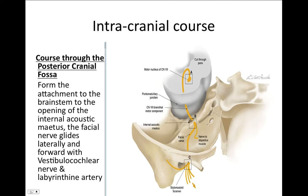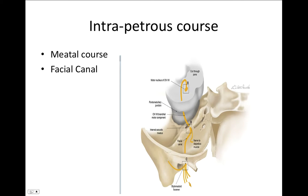Coming to the course through the posterior cranial fossa — from the attachment to the brainstem to the opening of the internal acoustic meatus. The nerve emerges from the lateral part of the pontomedullary junction and moves into the internal acoustic meatus, along with the vestibulocochlear nerve and the labyrinthine artery.